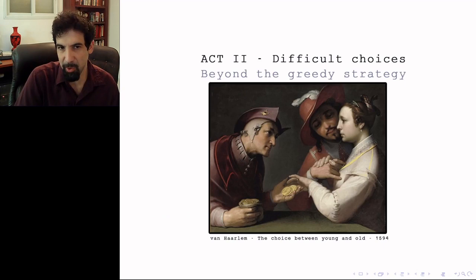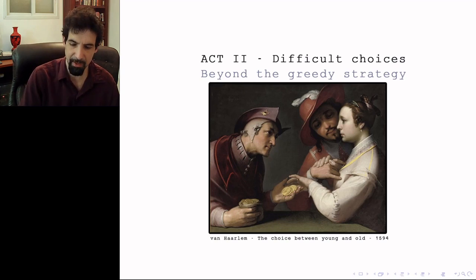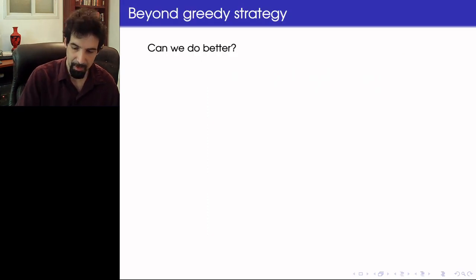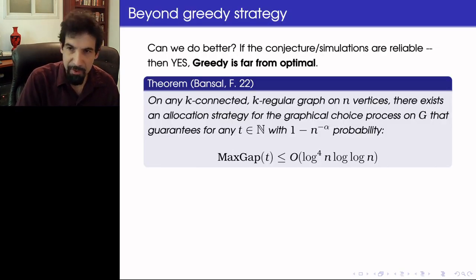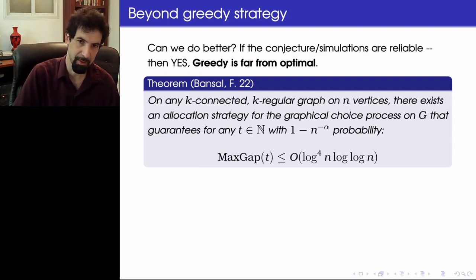So this brings up the question, is the greedy policy for deciding on two choices in the graphical setting always asymptotically optimal? Can we do better than greedy? And if the conjecture and simulations are reliable, then we can do much better than greedy.